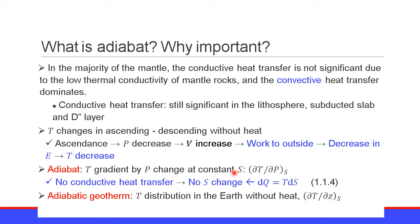The adiabatic gradient is the temperature gradient by pressure change at constant entropy, namely without heat. The adiabatic geotherm is the temperature distribution in the Earth without heat, expressed as ∂T/∂z at constant S.